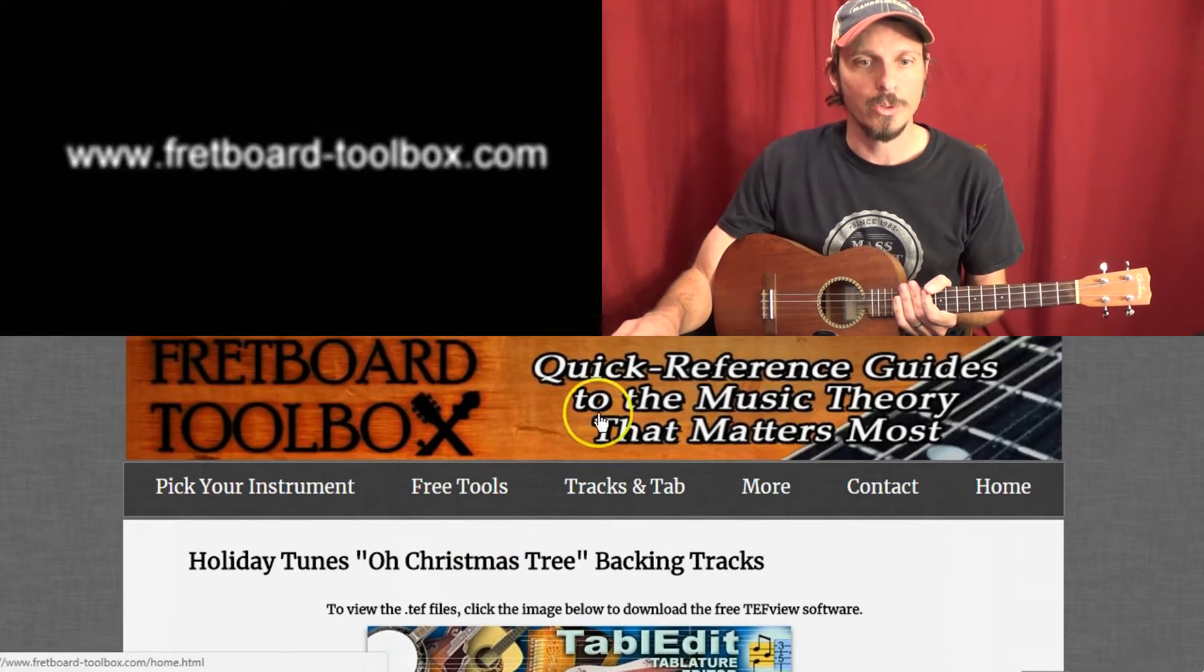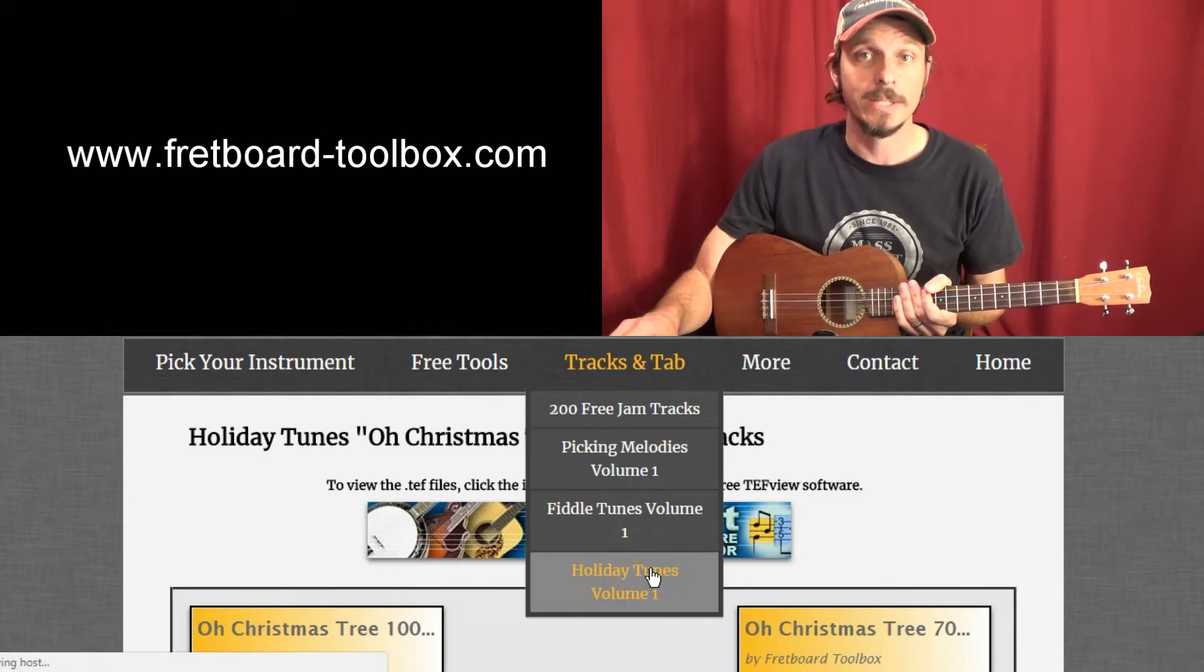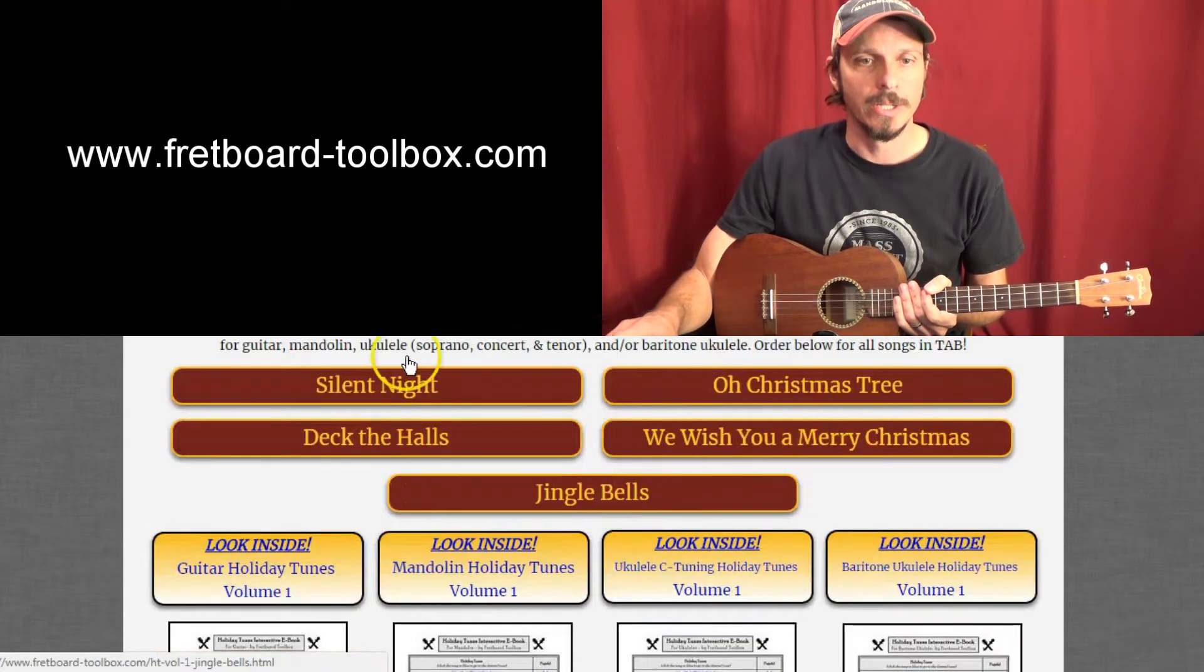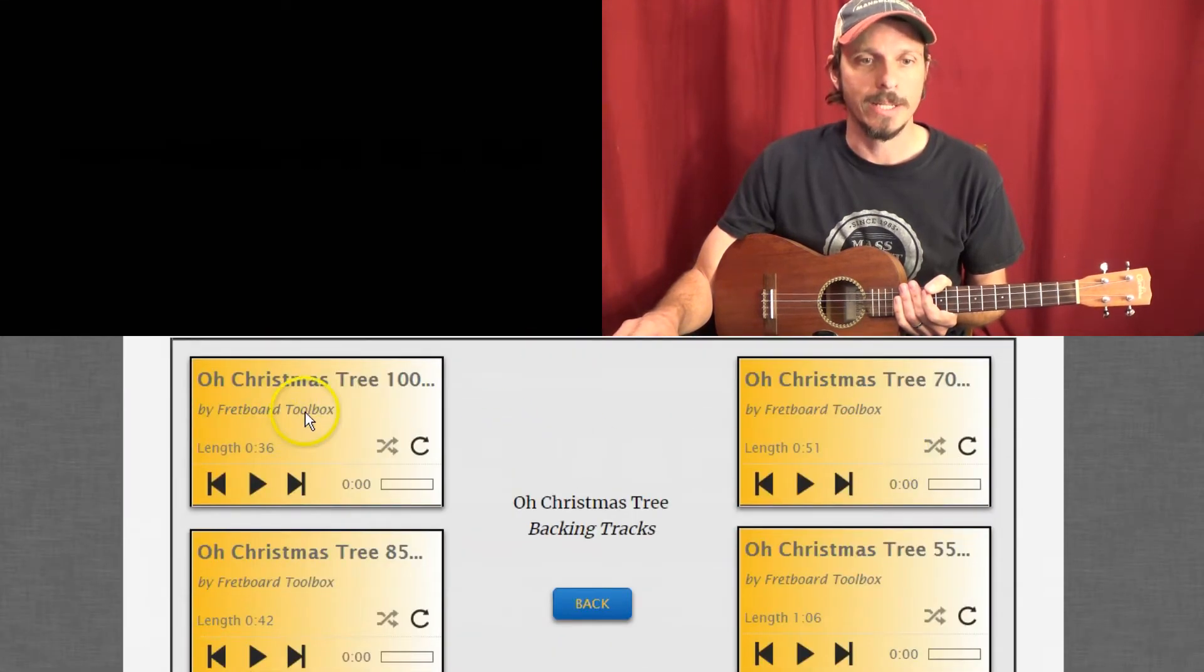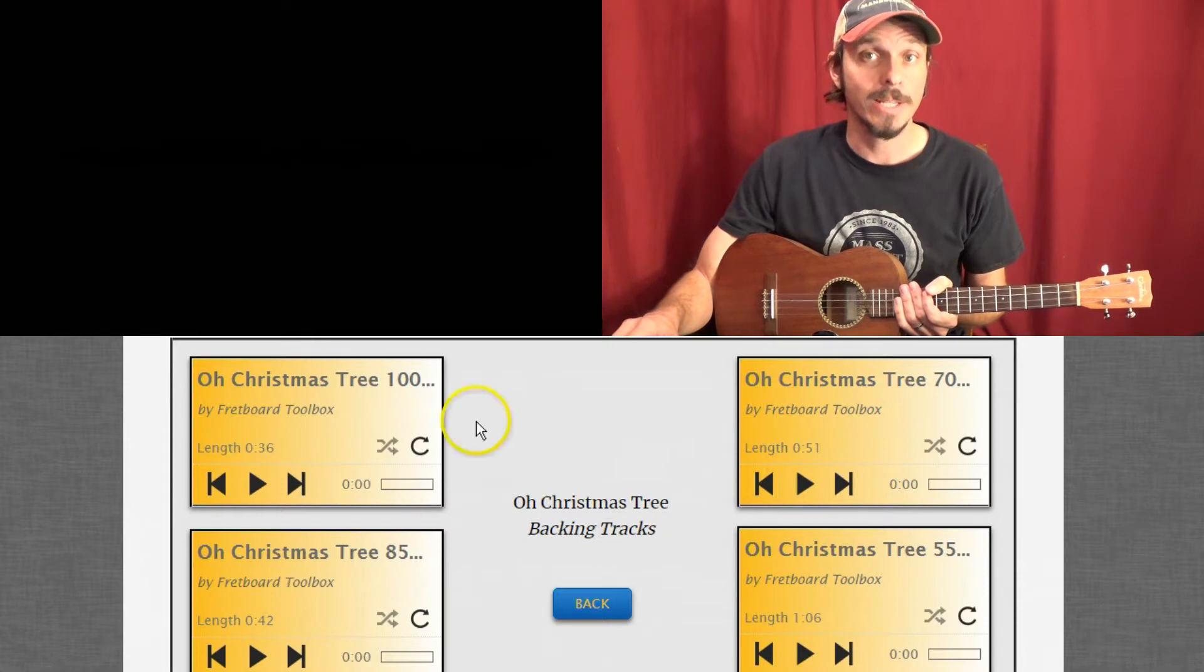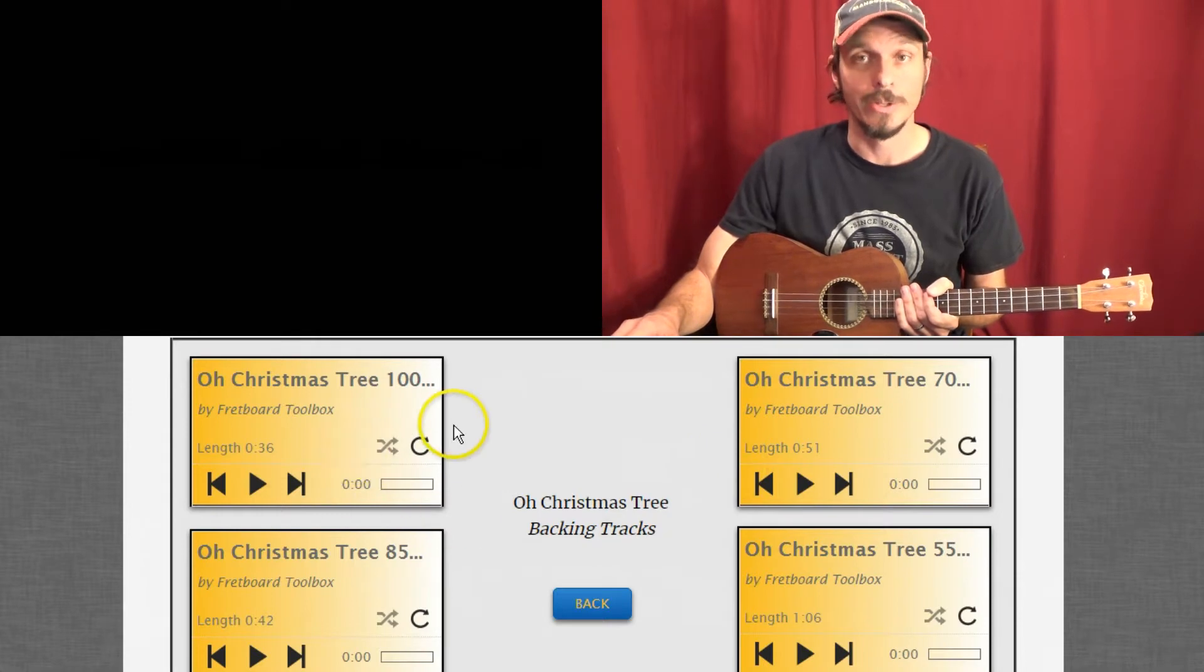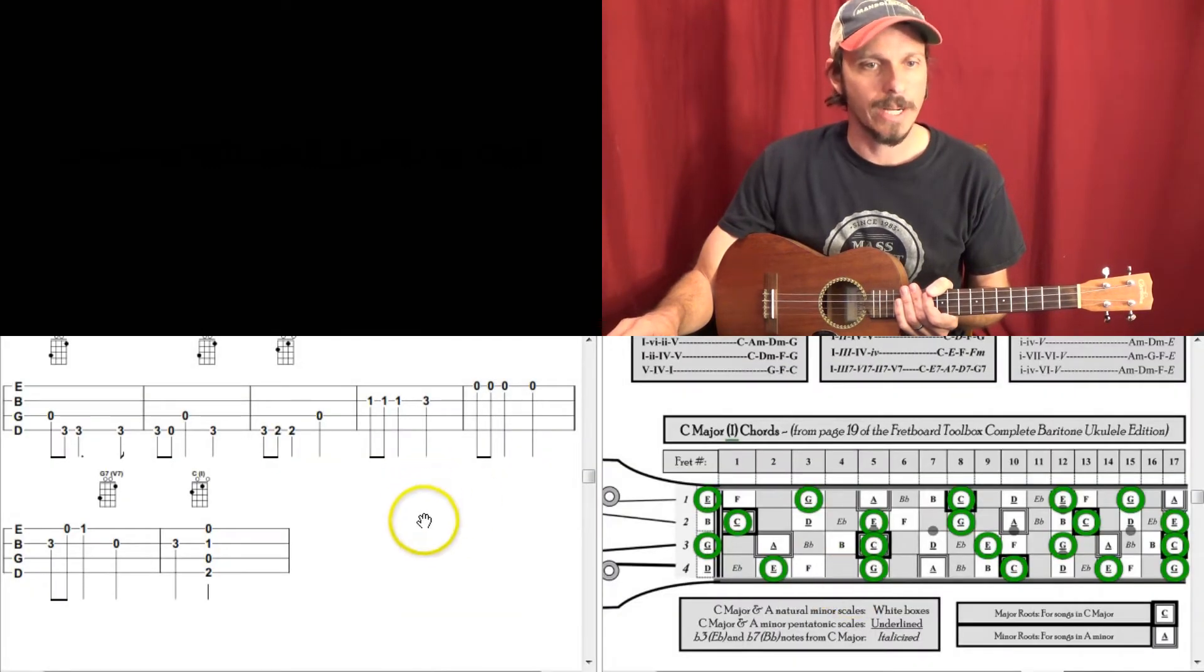And if you are jumping ahead to the chord part, I still want to show you this, which is if you go to the Fretboard Toolbox website and go to Tracks and Tab, click on Holiday Tunes Volume 1, you get all the backing tracks for the songs for free. So we're listening to Oh Christmas Tree, and you can play it at 100% speed, 85, 70, 55, so you can work your way up to the faster times. But play along with these backing tracks. It's huge, whether you're doing the melody or the melody plus chords.